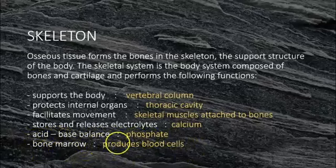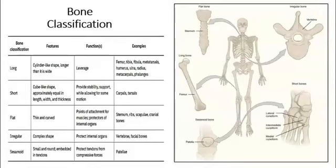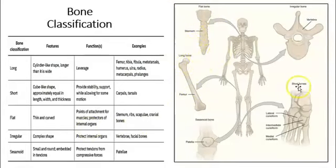Blood formation is another function — inside the bone you have bone marrow, and the bone marrow produces red blood cells. Bones can also have multiple different shapes, for example flat bones, long bones, short bones, and irregular bones.